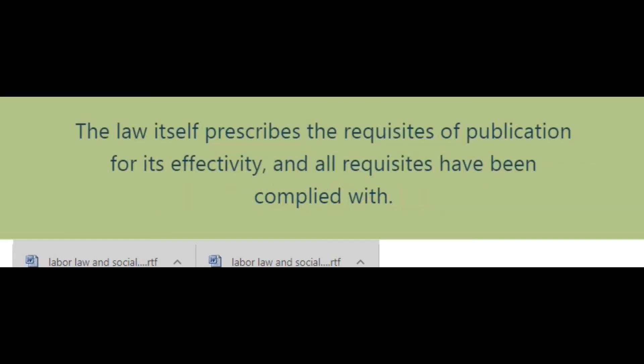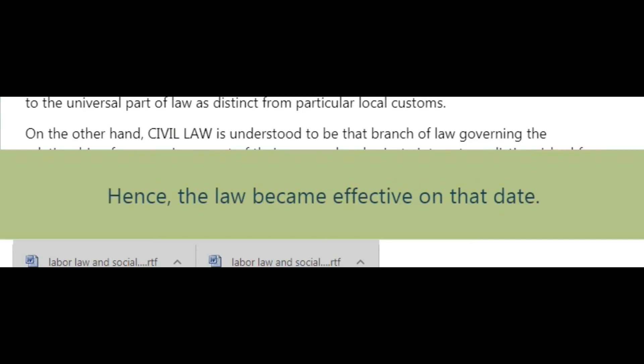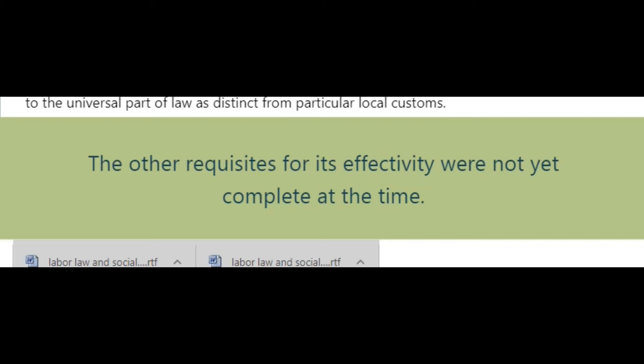The law itself prescribes the requisites of publication for its effectivity, and all requisites have been complied with (Article 2, Civil Code). Answer (B): The law takes effect upon compliance with all conditions for effectivity, and the last condition was complied with on July 10, 1990; hence the law became effective on that date. Answer (C): No. It was not yet effective when approved by Congress on July 1, 1990, and signed by the President on July 3, 1990, as the other requisites for effectivity were not yet complete at the time.